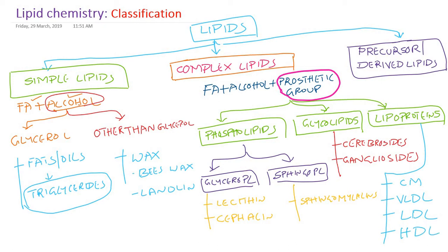The last category is derived lipids. Derived lipids are either derived from simple lipids or complex lipids. However, the term is a misnomer because some lipids classified here are not derived from simple or complex lipids — they are synthesized de novo in our body. That is why we also call them precursor lipids. Examples include fatty acids and glycerol, which are part of both simple and complex lipids and are released upon hydrolysis.